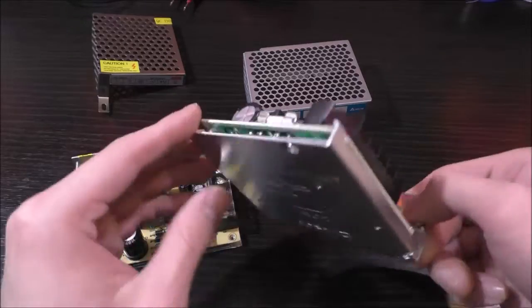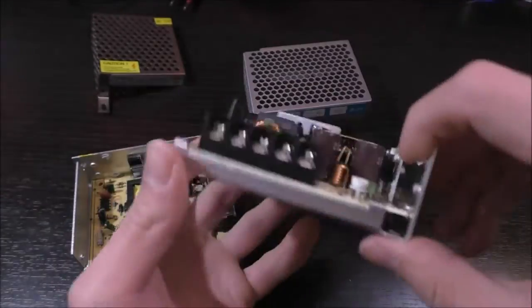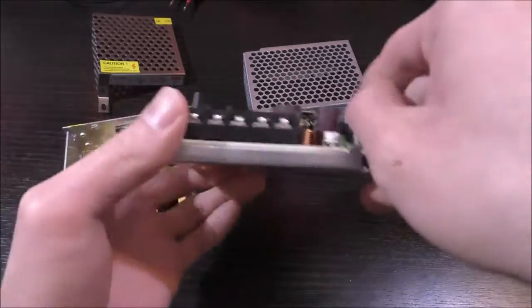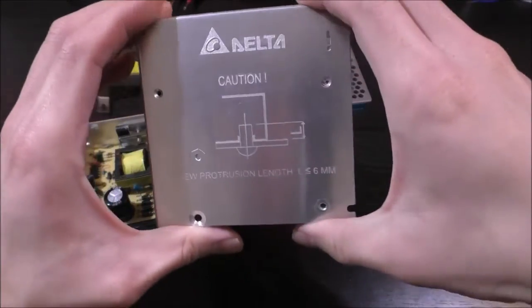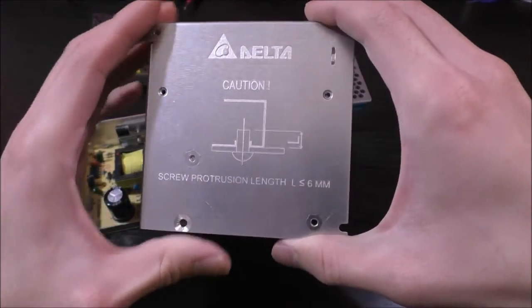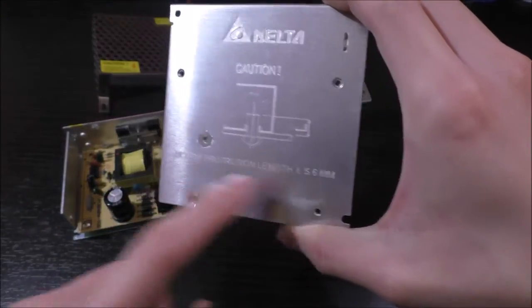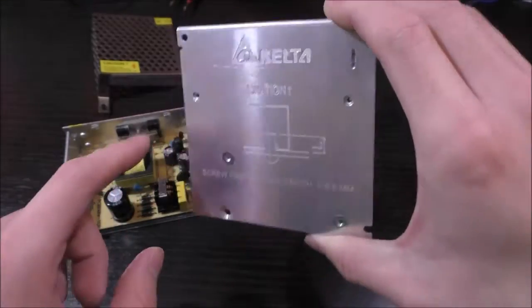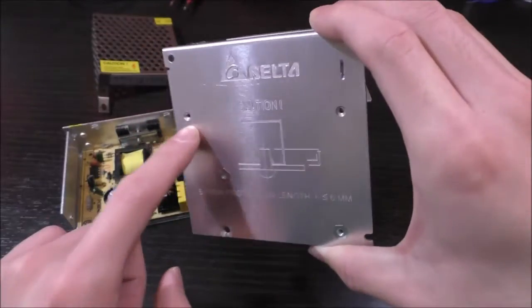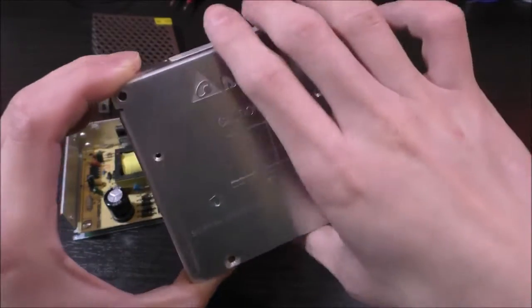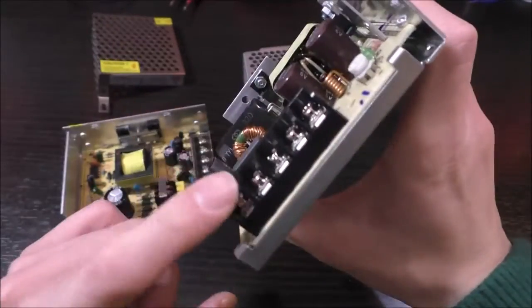That aside, the rest of the case is made of sheet aluminum, just like the Chinese power supply. And I found that they actually had a nice warning at the bottom, telling you that there's a screw protrusion length that should be less than 6mm if you were to attach a screw from the bottom or if you're going to mount this inside a chassis. And if you have a screw that protrudes out too long, it might touch the bottom of the PCB over here.